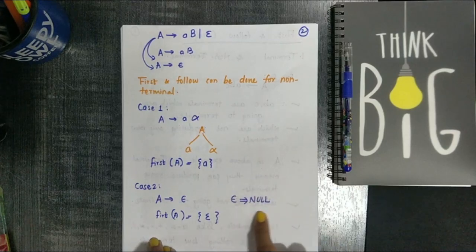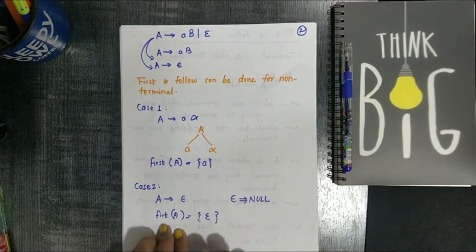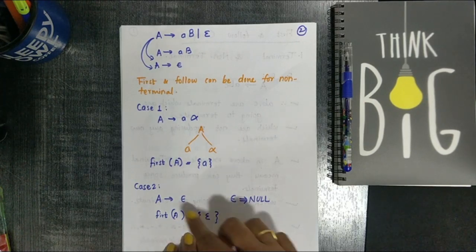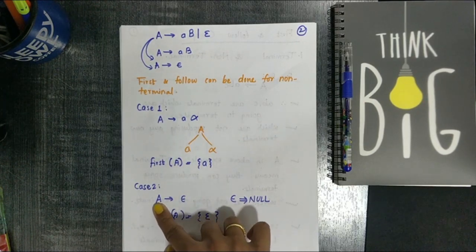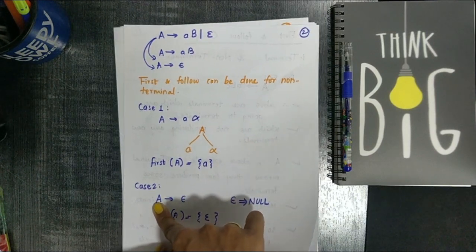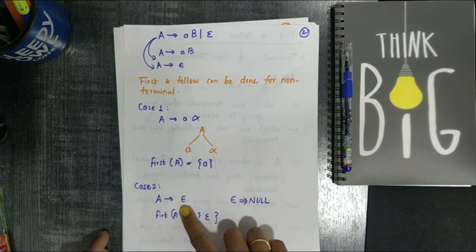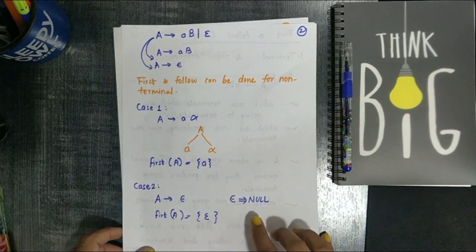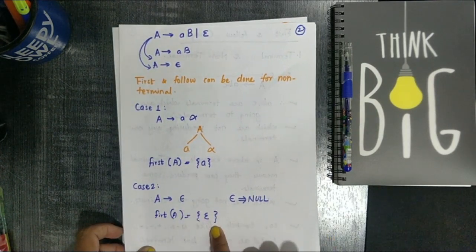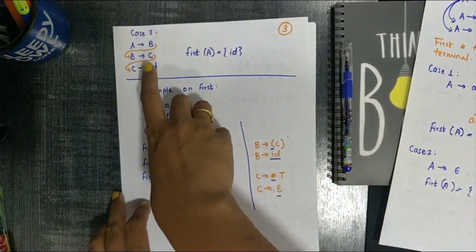Case 2: if A tends to epsilon — epsilon means null, always remember that. So First(A) = {ε}, that is the null value. If the starting variable tends to a null value, then First of A in this case is null. This is possible in First — null or epsilon can appear in First.